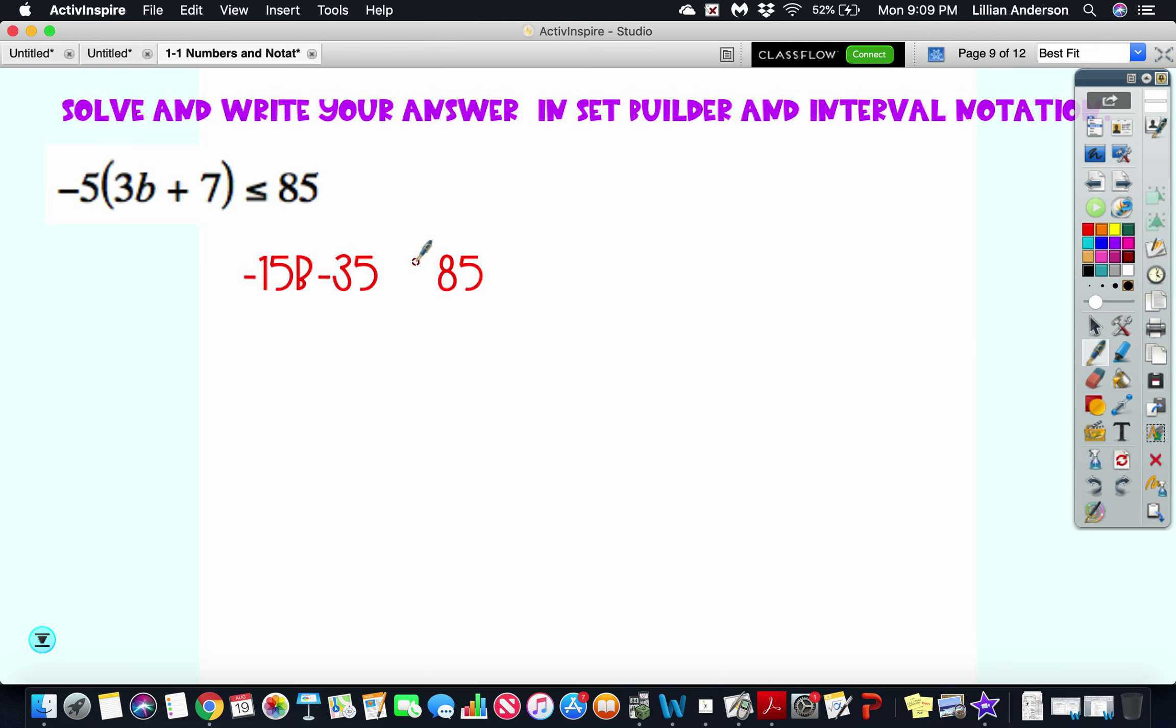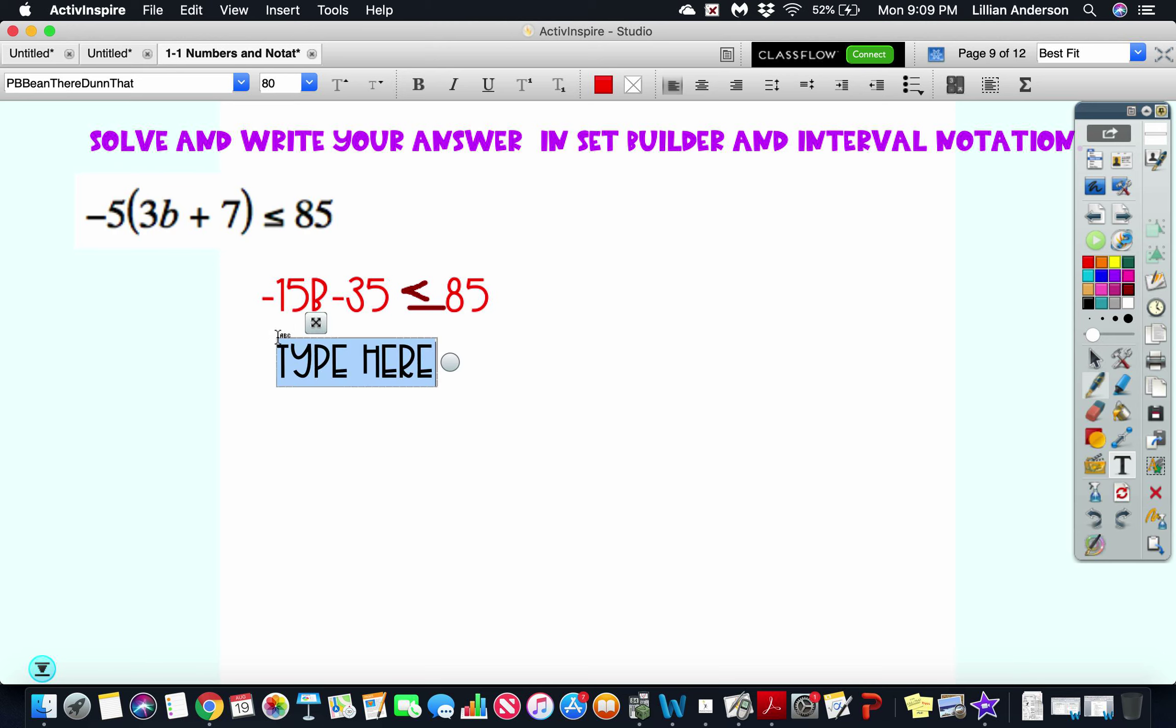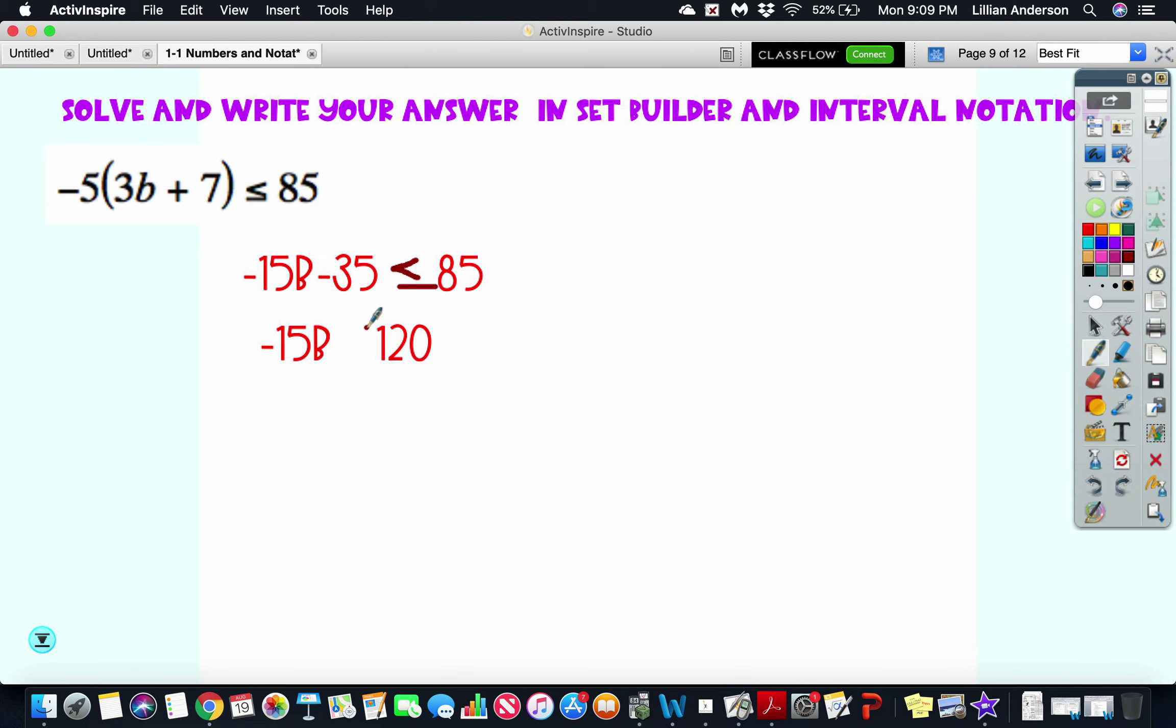From here, all we have to do is solve for b. We're going to add 35 to both sides. So it's going to be negative 15b is less than or equal to, when I add that, that's going to give me 120. So it's going to be negative 15b is less than or equal to 120.